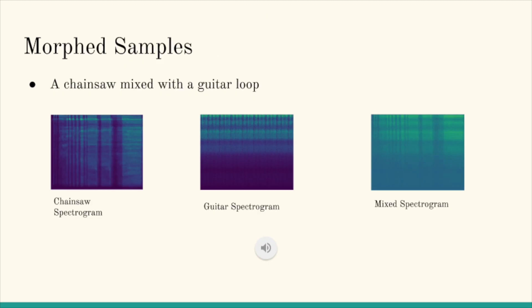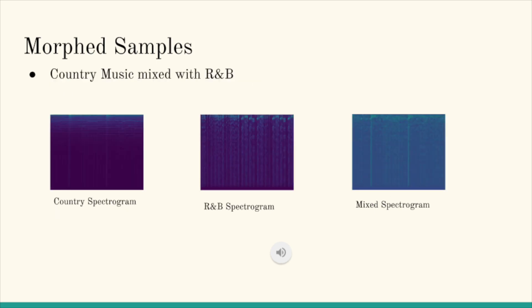Here I have two samples to show you guys. The first one is a chainsaw mixed with a guitar loop similar to what happened with Doom. And this next one is country music mixed with R&B. These are two very good results that we got with our model. So now we'll be doing our concluding remarks.